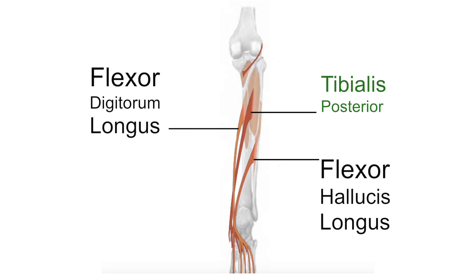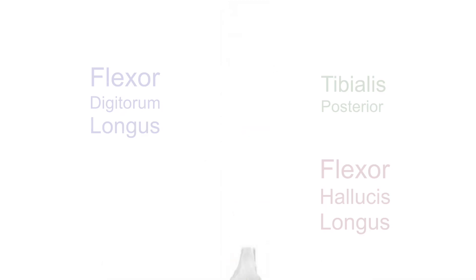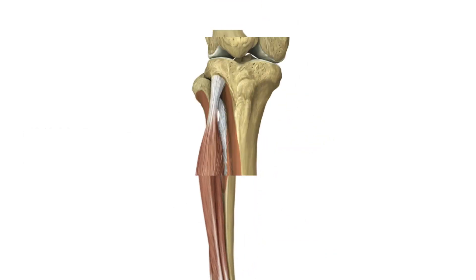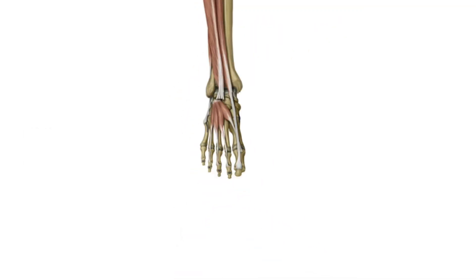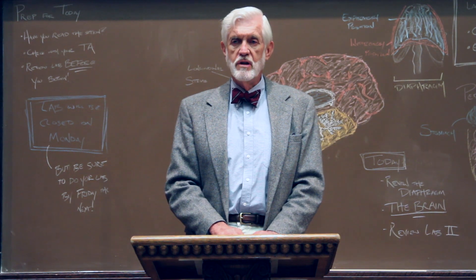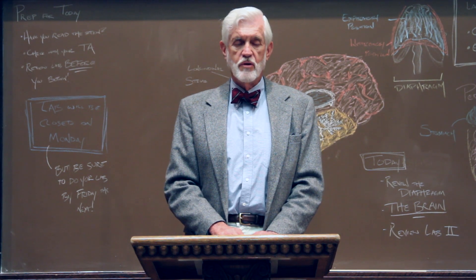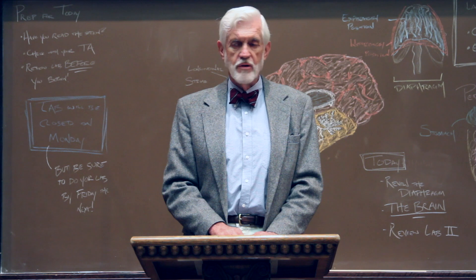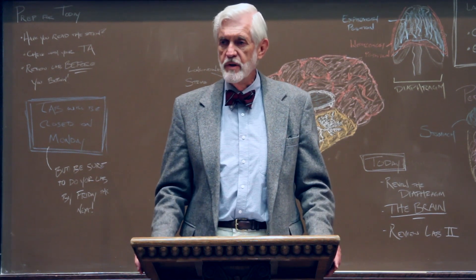Here are the muscles of the lower leg: tibialis posterior, flexor digitorum longus, flexor hallucis longus, peroneus brevis, peroneus longus, peroneus tertius. These muscles play a key role for many movements that are essential for human movement.